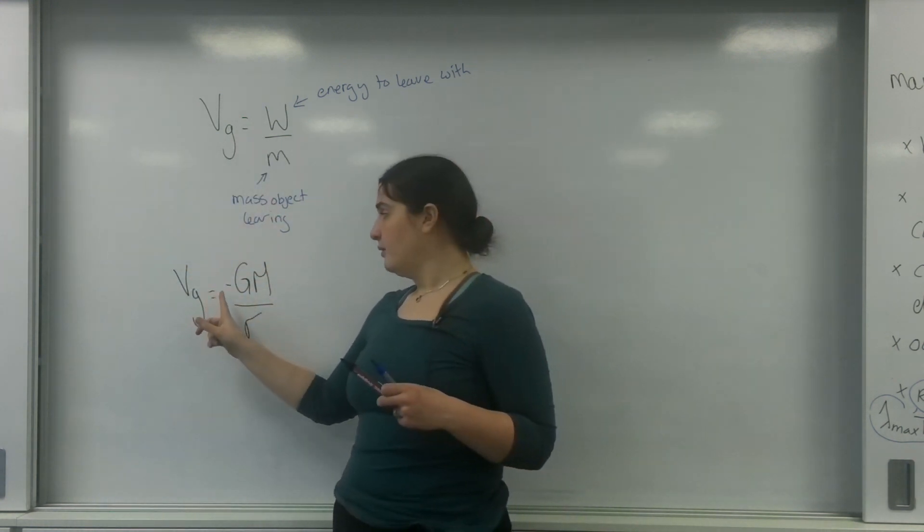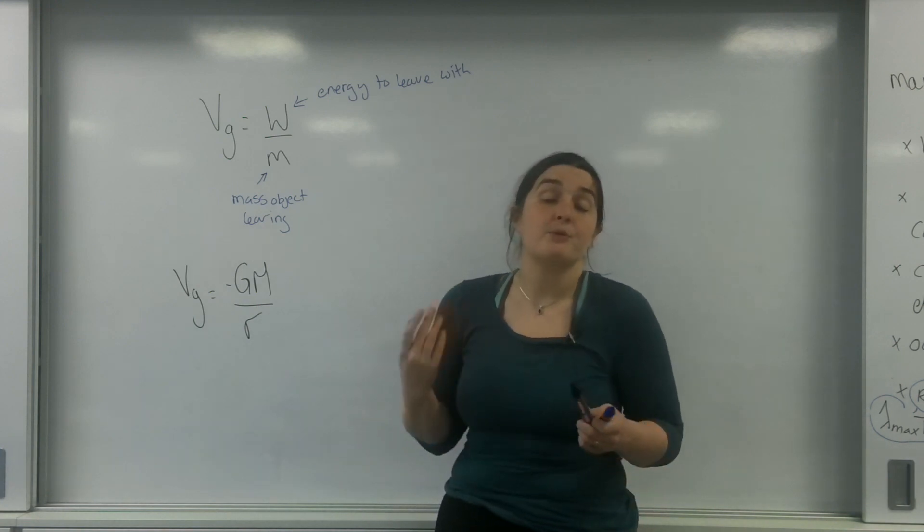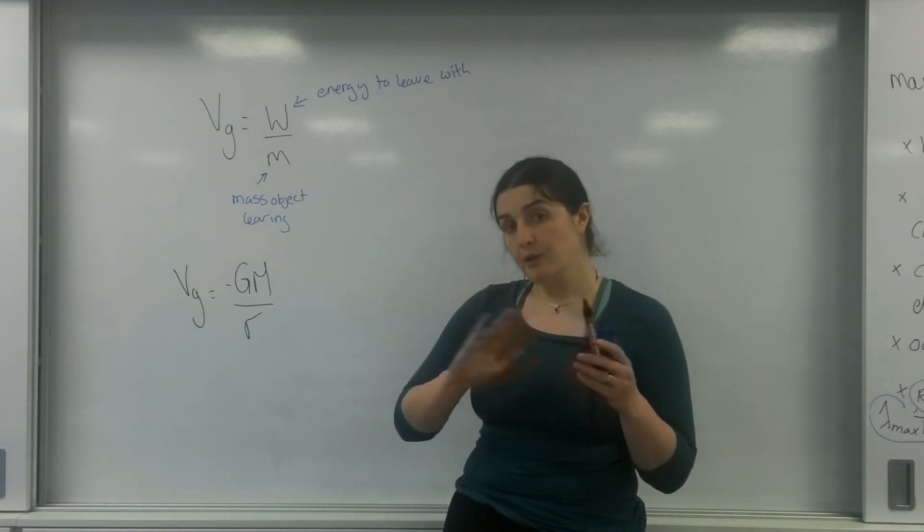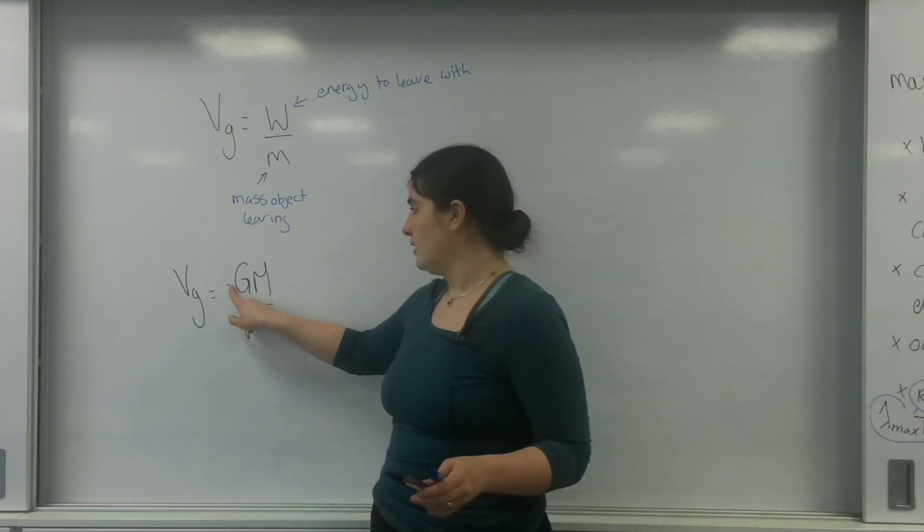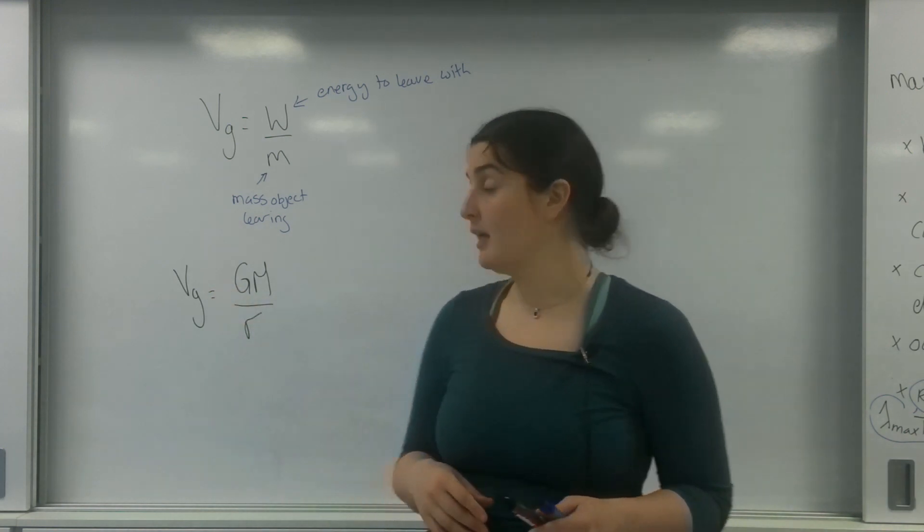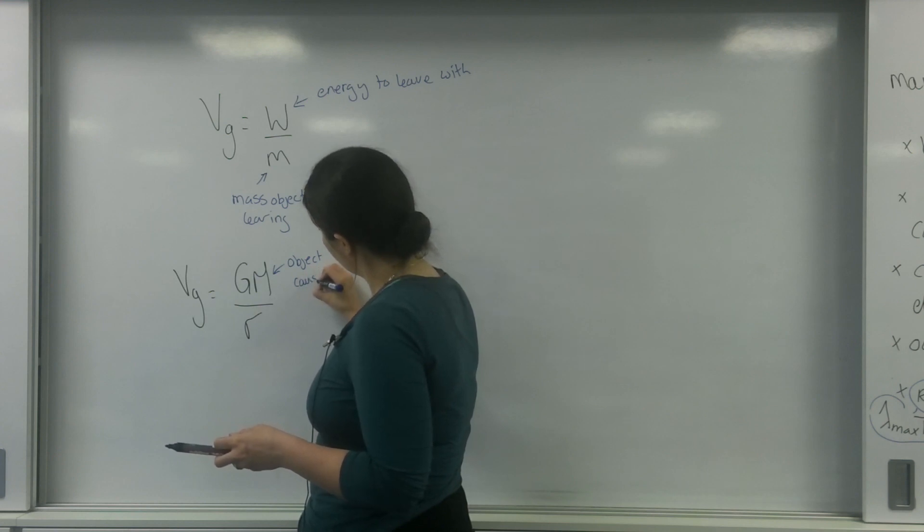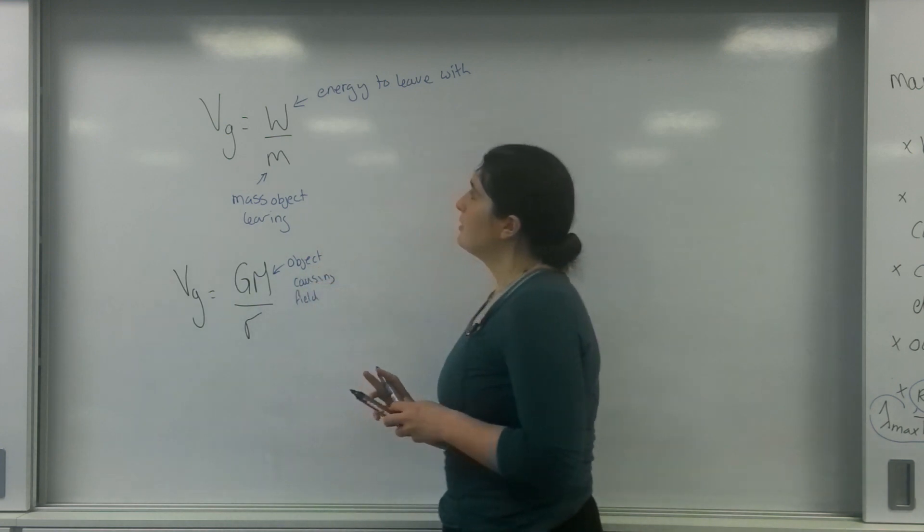This negative sign tells me that the energy must be put in. I must actually put energy in because the fields are attractive. I'm going to ignore that sign today because I'm not interested in it, because I already know that I have to add the energy. This big M, of course, is the object causing the field.